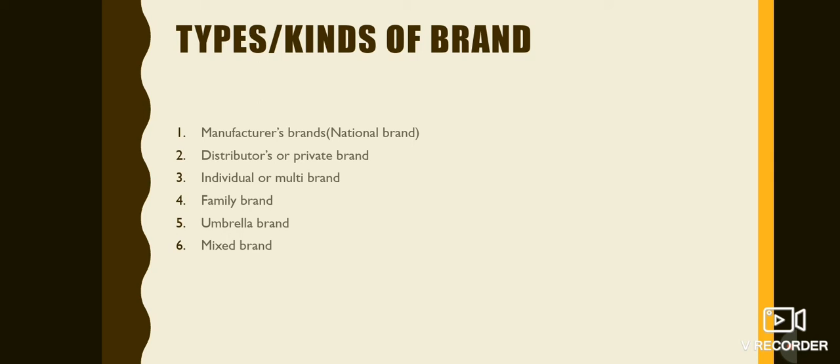The third type is individual or multi-brand. Individual brands are those where each product has a unique brand name. A company adopts a policy of using distinctly different brands for each of its products. Various brands of soaps by Hindustan Lever is an example. Each product gets its own logo and trademark. Multi-brand is a strategy where two or more brands are sold in the same product category.